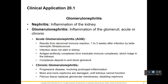If you get glomerulonephritis — nephritis means inflammation of the kidney, so glomerulonephritis is inflammation of the glomeruli — this can be acute or chronic. Acute glomerulonephritis results from an abnormal immune reaction one to three weeks after infection by beta-hemolytic streptococcus. The bacterial infection forms complexes that block the glomeruli, causing them to swell. Chronic glomerulonephritis is due to some disease where the nephrons are damaged — specifically the glomerulus — and the nephrons no longer work.